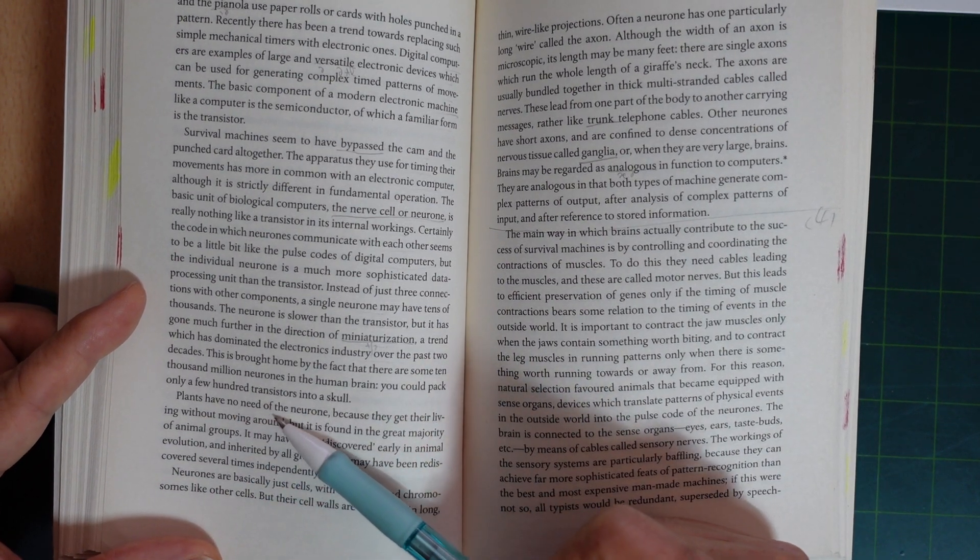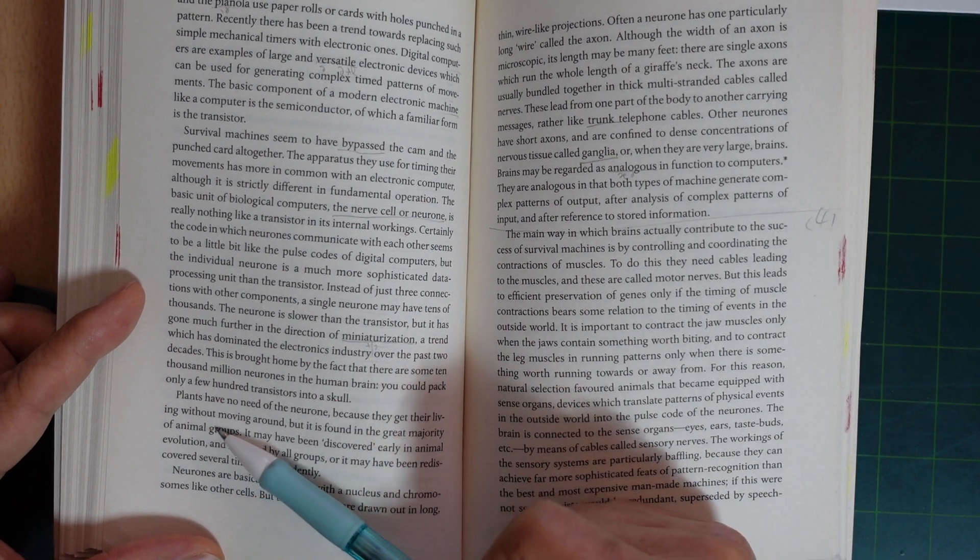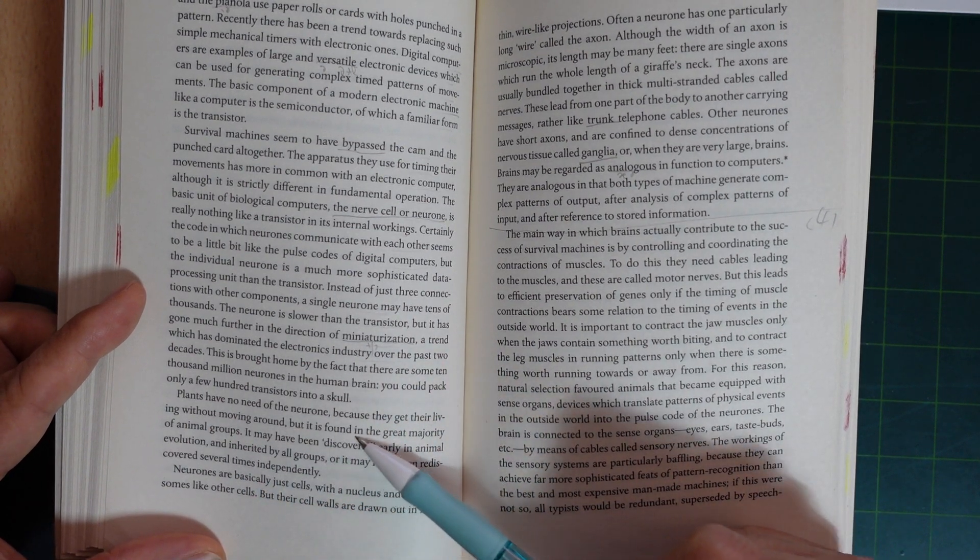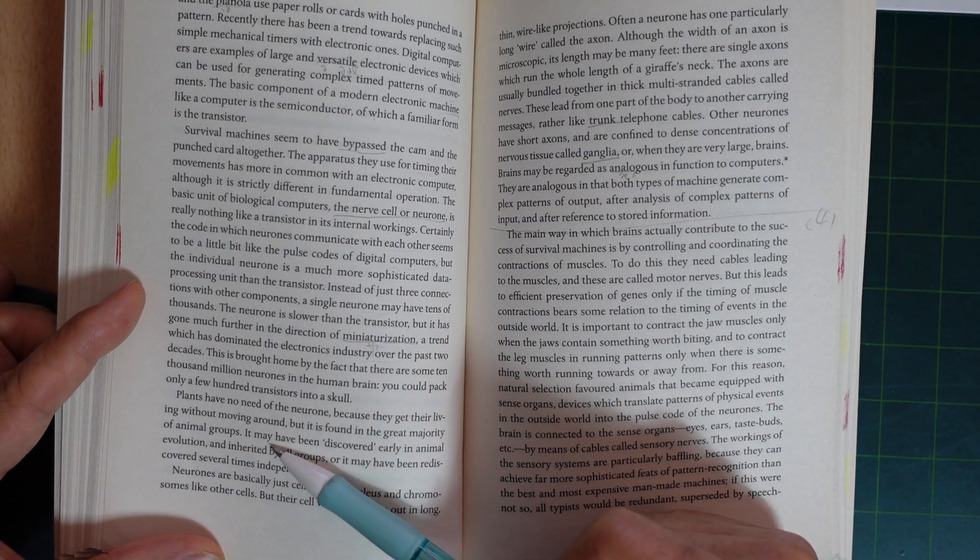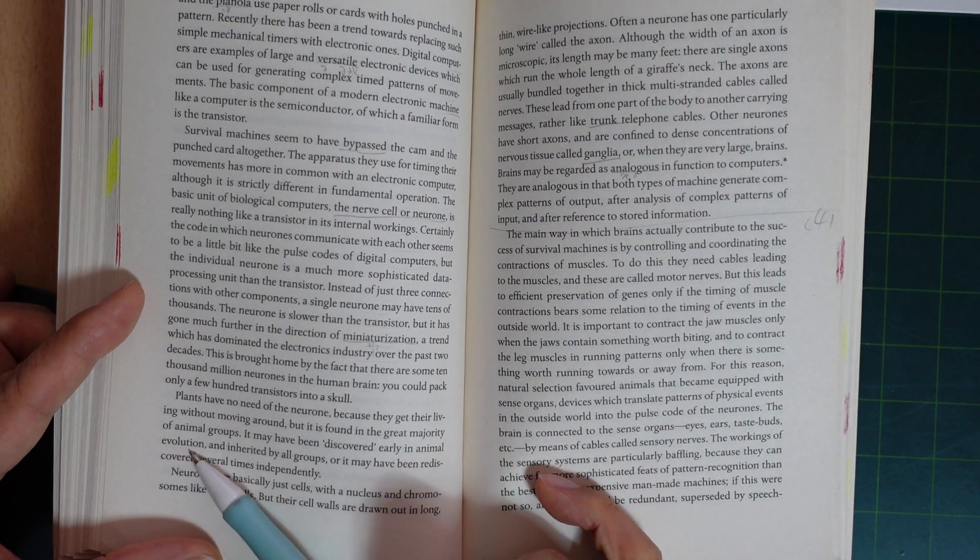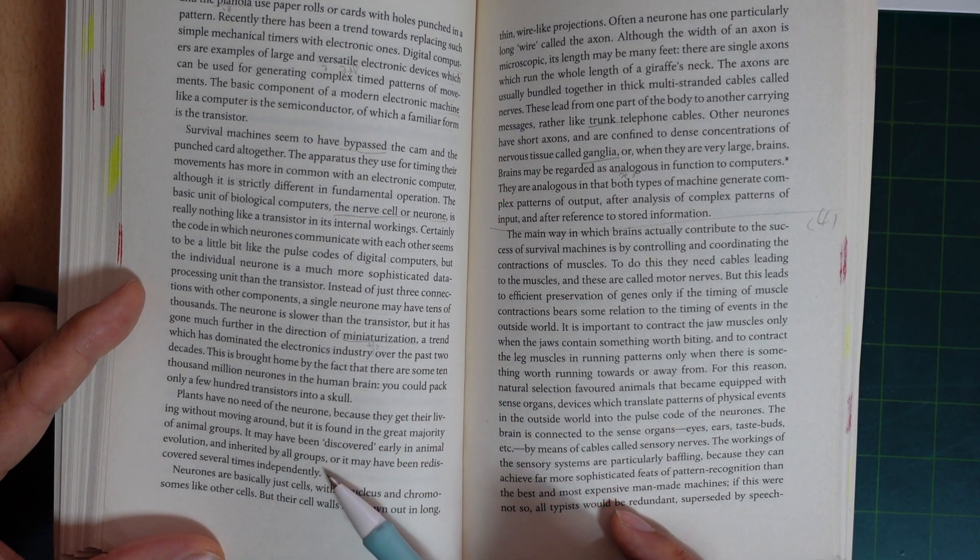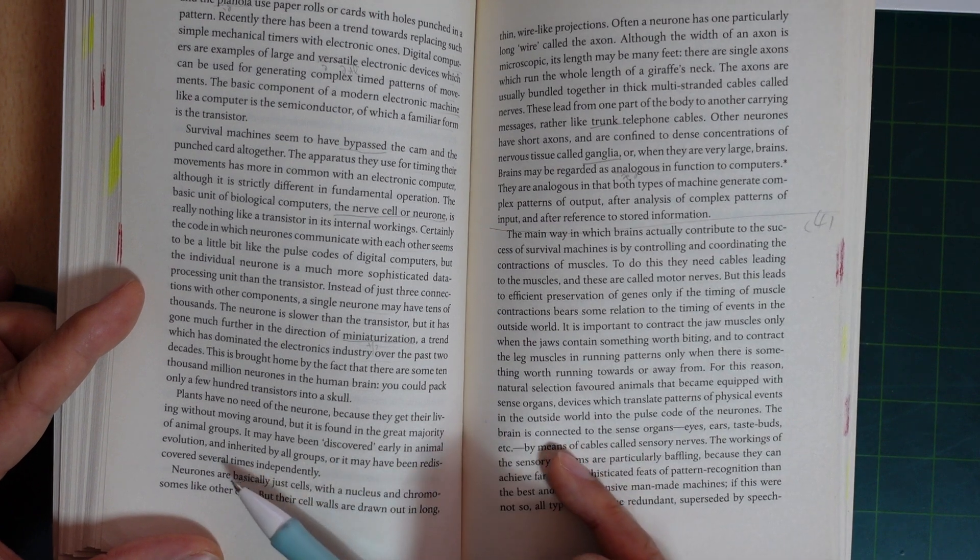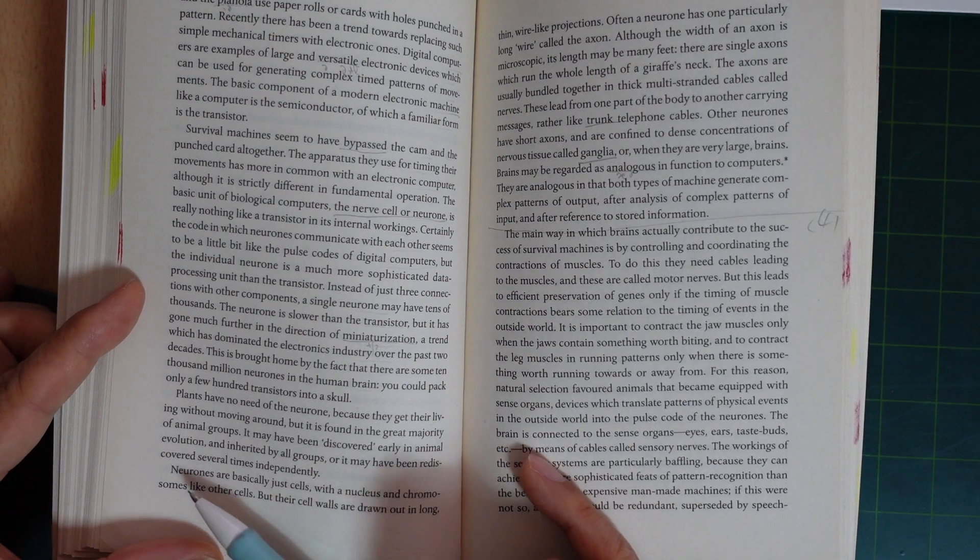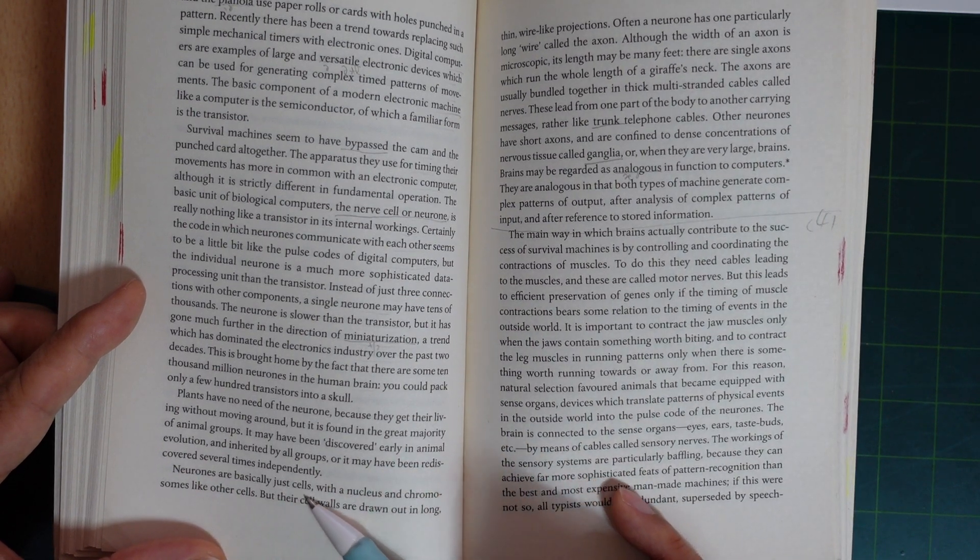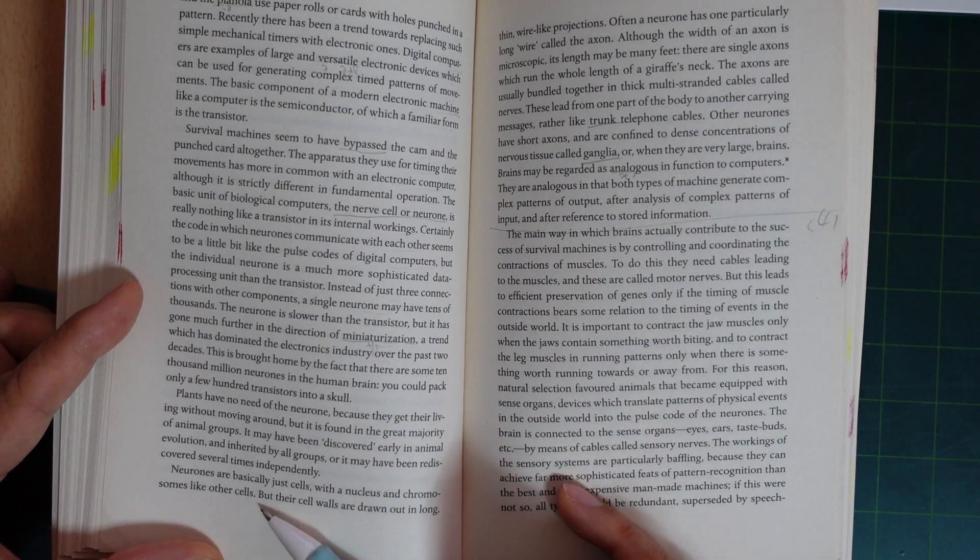Plants have no need of the neuron because they get their living without moving around. It is found in the great majority of animal groups. It may have been discovered early in animal evolution and inherited by all groups, or it may have been rediscovered several times independently. Neurons are basically just cells with a nucleus and chromosomes like other cells.